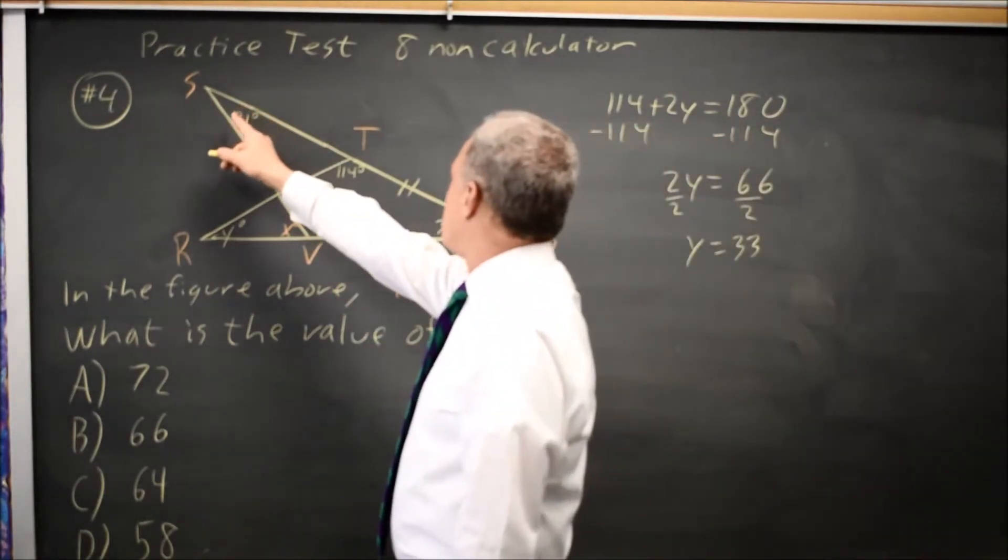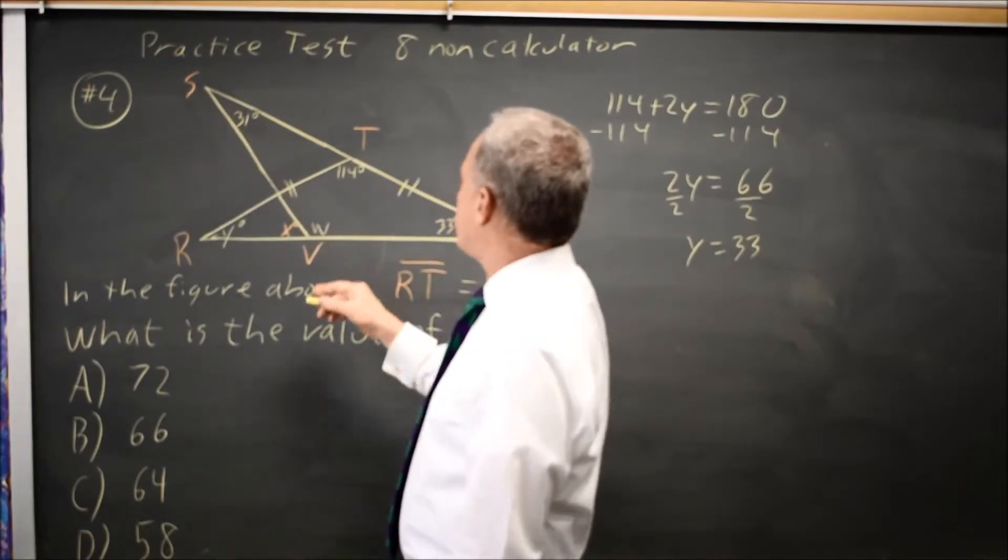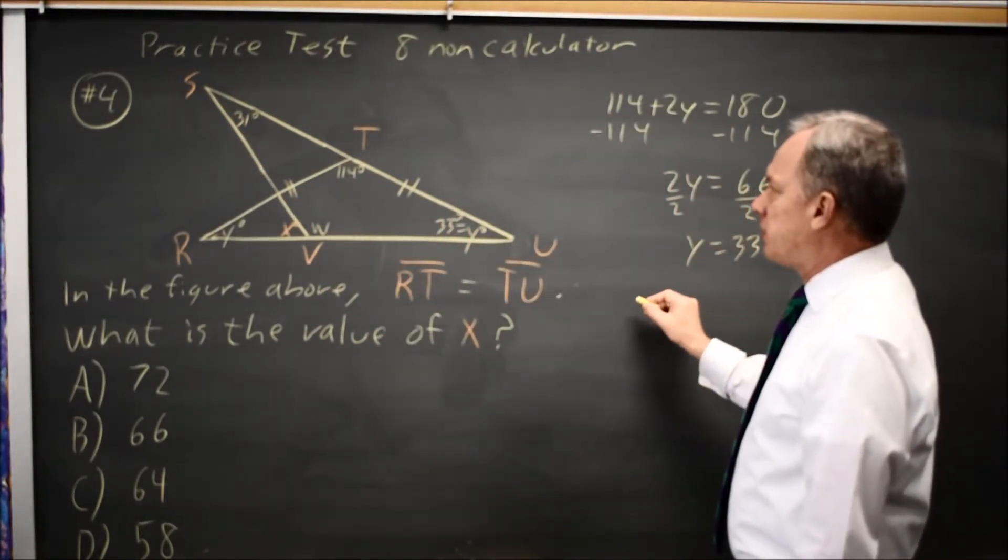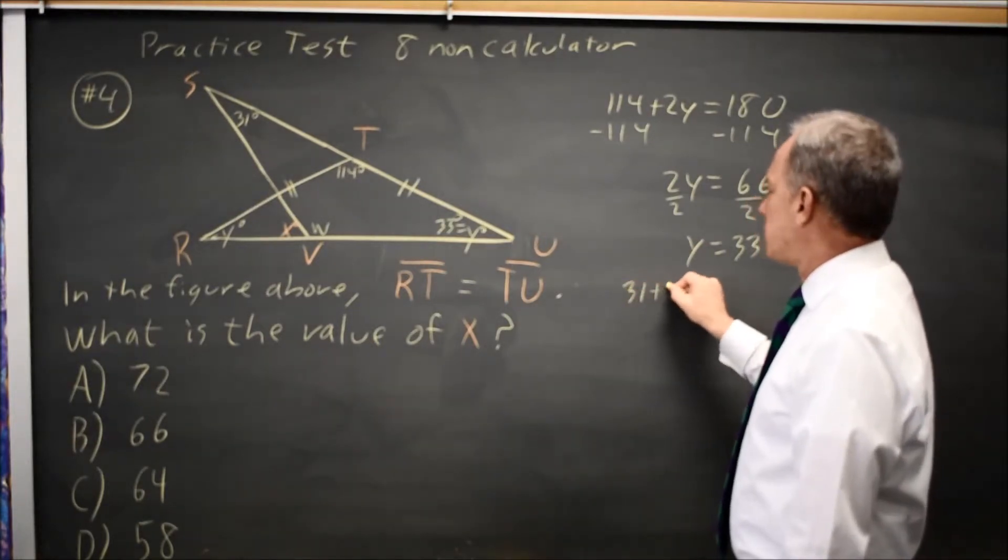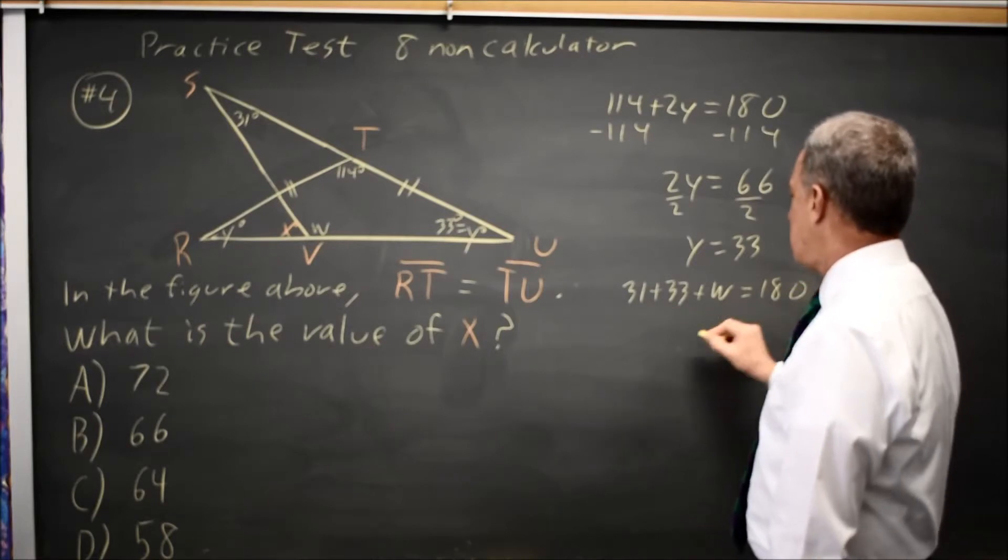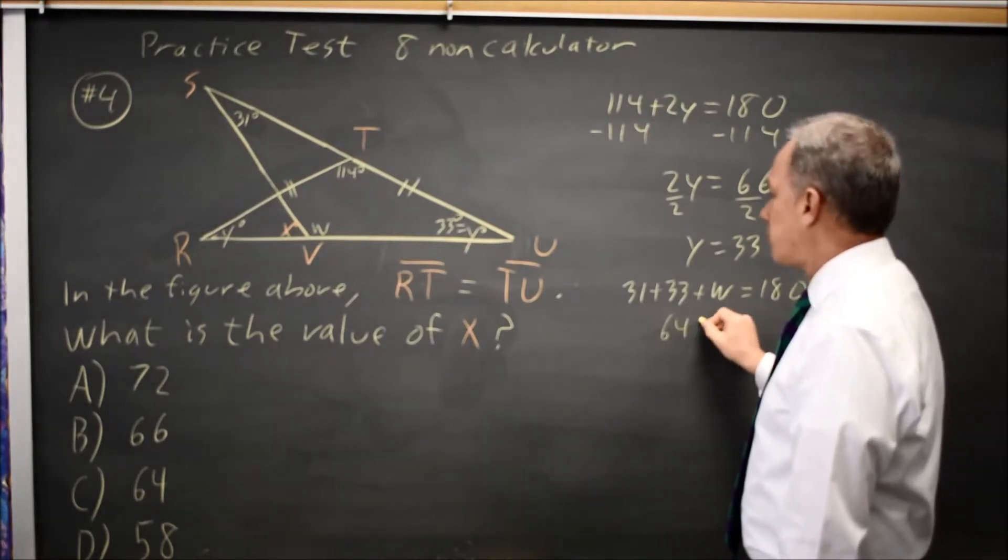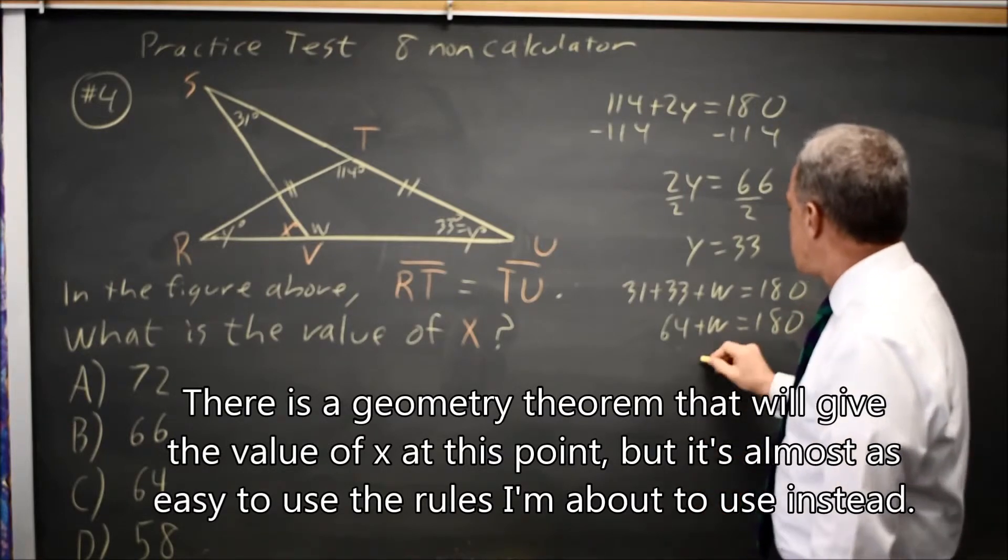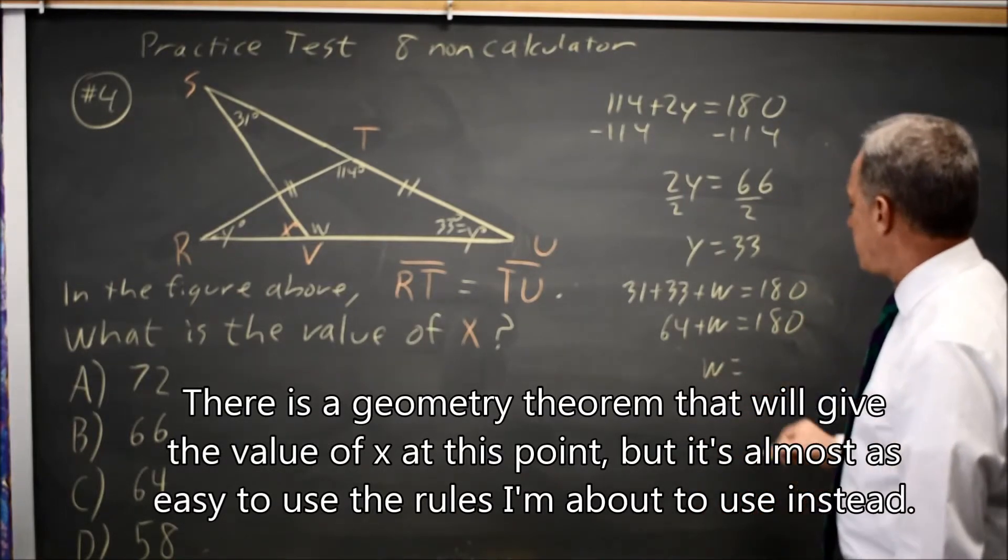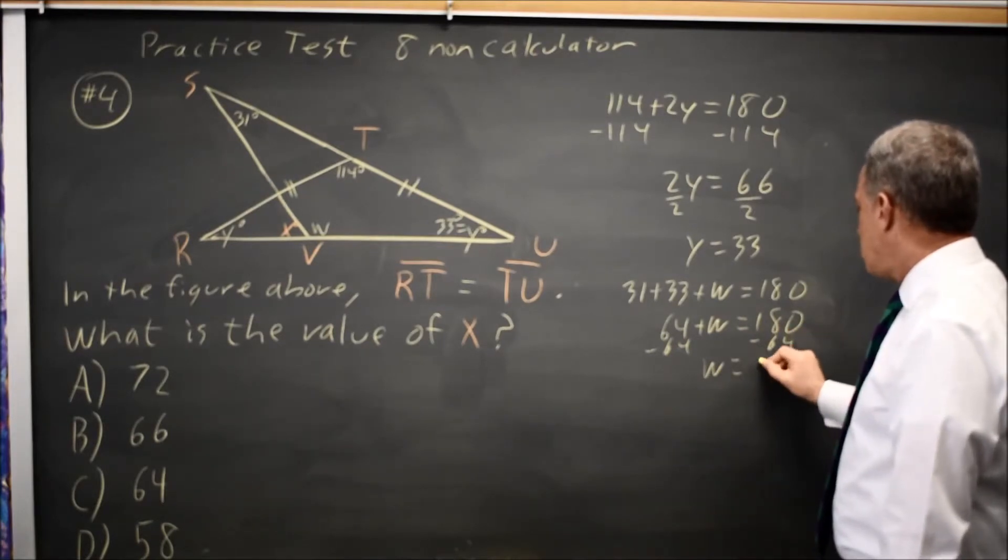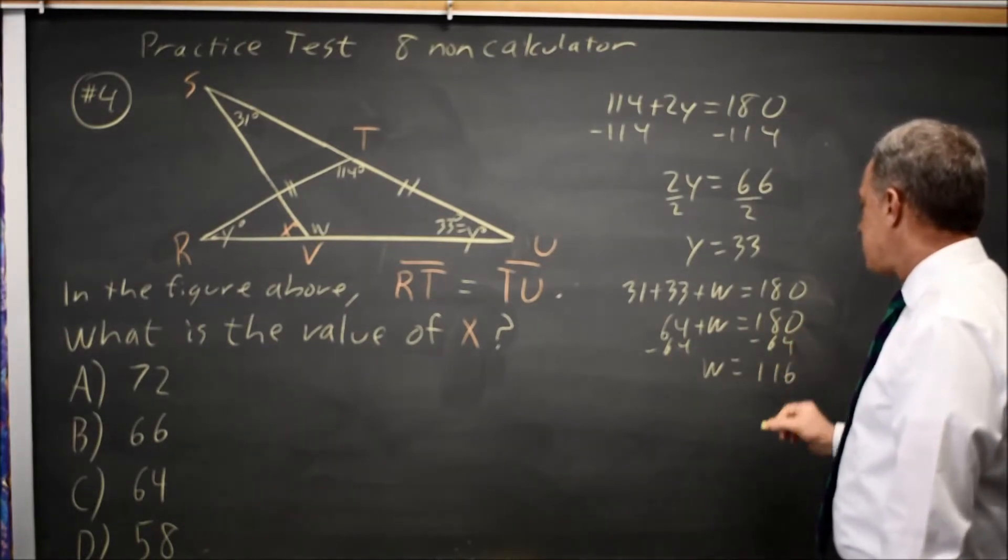I have my triangle SUV and that adds up to 180. So 31 plus 33 plus W equals 180. So that's 64 plus W equals 180 degrees. W equals 180 minus 64 would be 116.